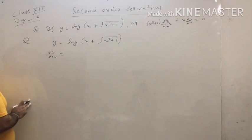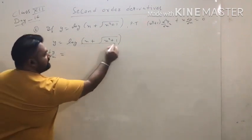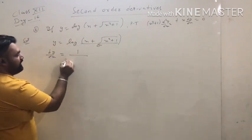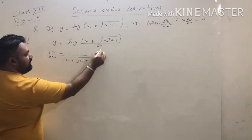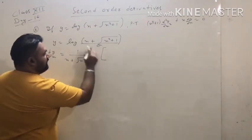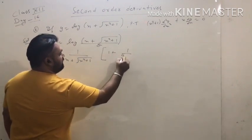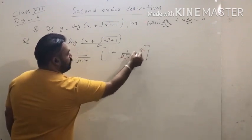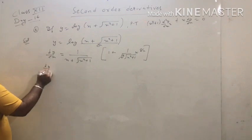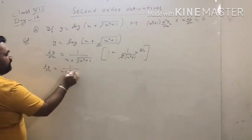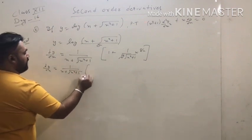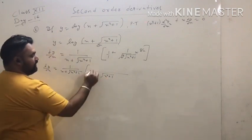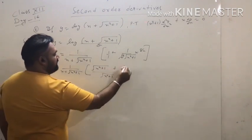The question is y equals log(x + √(x² + 1)). Now dy/dx: this is log θ, so the derivative of log θ is 1/θ, times the derivative of θ. The derivative of x is 1; the derivative of √(x² + 1) is (1/(2√(x² + 1))) · 2x. The 2s cancel out. So dy/dx = 1/(x + √(x² + 1)).